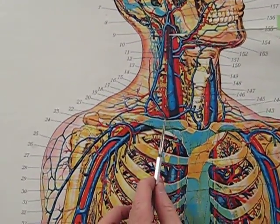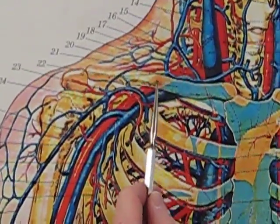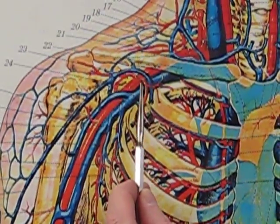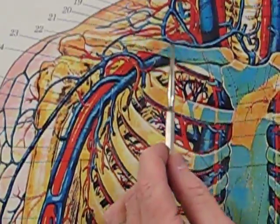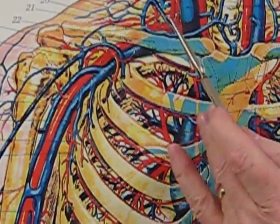The right subclavian artery is here. After it emerges into the axilla, its name changes to the axillary artery. Before it emerges into the axilla, these are the tributaries you want to know.